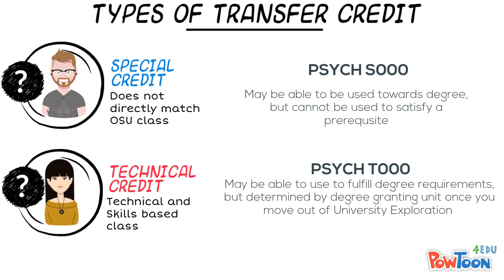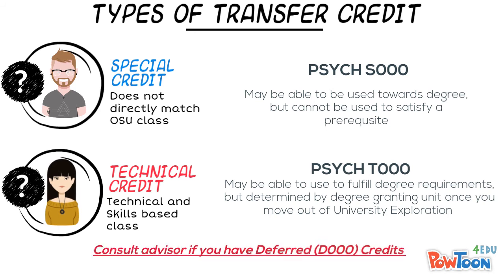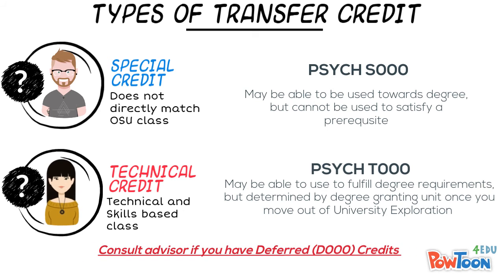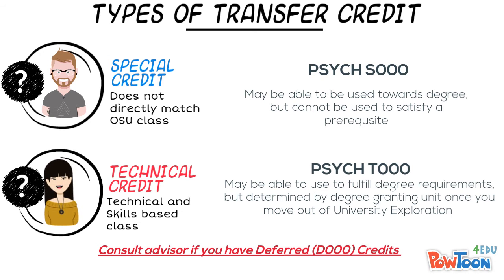Finally, you might have some credits that have been deferred. These would be designated as D000. If you have deferred credits, please consult with your advisor on how to determine if those credits can be used at Ohio State.